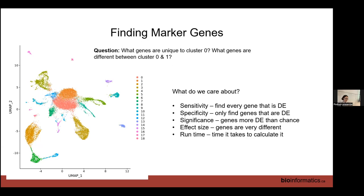We often don't really care about the significance — the top 50 differentially expressed genes will be super significant basically all the time. We do care about effect size (fold change) and computation time, since we may be doing this for many clusters, many samples, and many clustering versions. The test Seurat uses with default parameters is designed for this purpose. If you use default parameters in Seurat for finding markers, do not report the p-values — they are meaningless with default parameters.